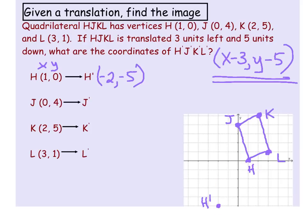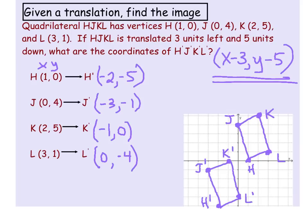Go ahead and complete the rest of these three points: J prime, K prime, and L prime. Hopefully this is the result you got: (0, 4) is now at (-3, -1), so we've shifted to the left three and down five. K, the point (2, 5), is now at (-1, 0)—to the left three and down five. The same thing with L: we've gone to the left three and down five. This is a translation. All we've done is taken this quadrilateral and slid it to the left and down.